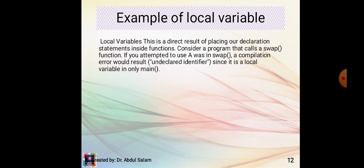An example of a local variable: consider a program that calls a swap function. If you attempted to use a variable from swap, a compilation error would result — 'undeclared identifier' — since it is a local variable in the main function only.